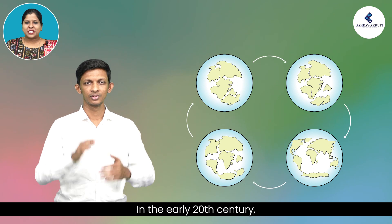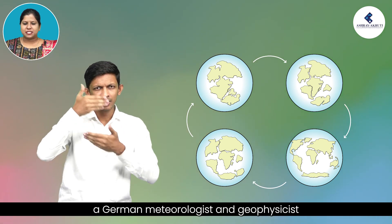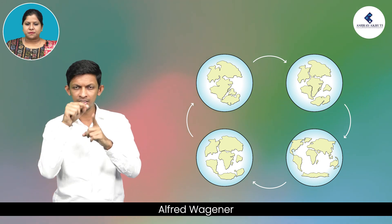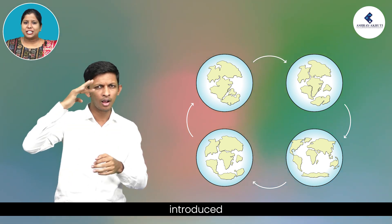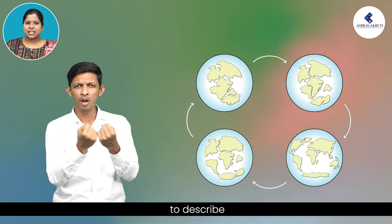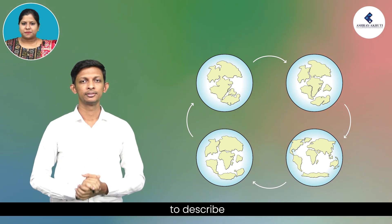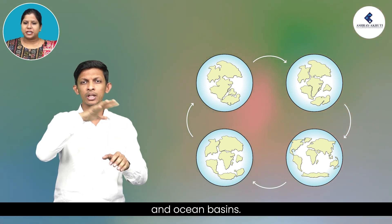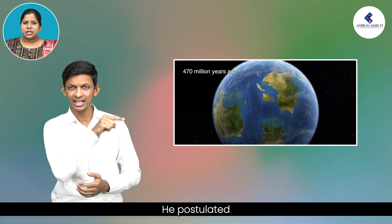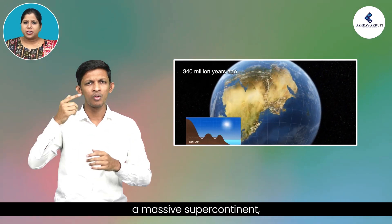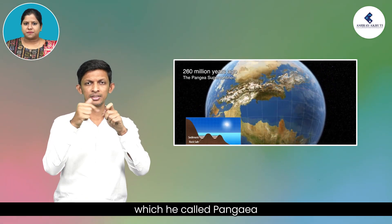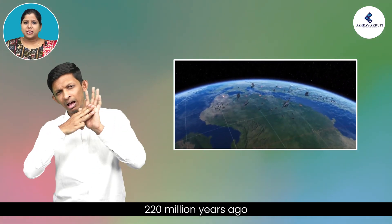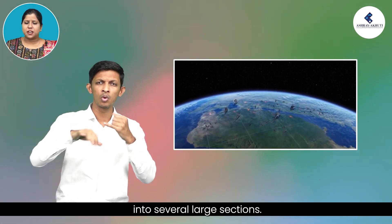In the early twentieth century, a German meteorologist and geophysicist Alfred Wegener introduced the theory of continental drift to describe and partially explain the present arrangement of continents and ocean basins. He postulated a massive supercontinent called Pangaea — Greek for 'whole land' — as having existed 220 million years ago and then breaking apart into several large sections.